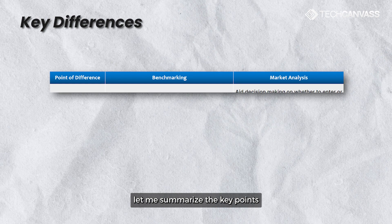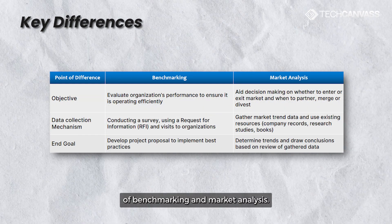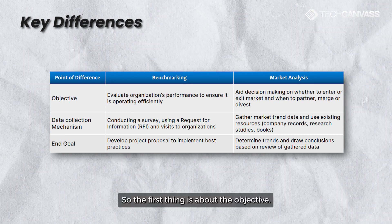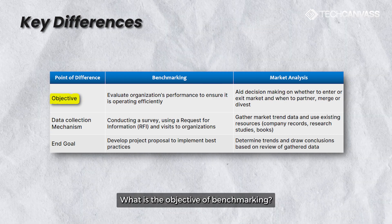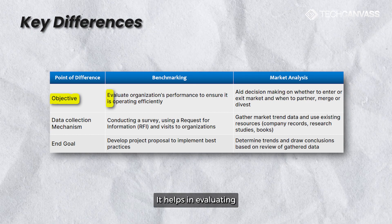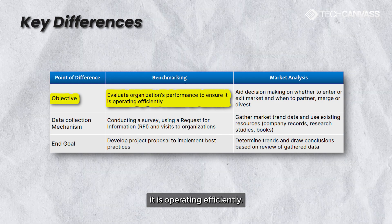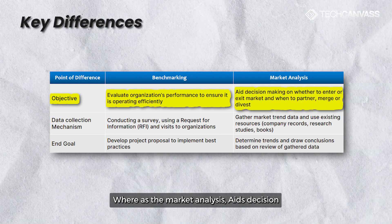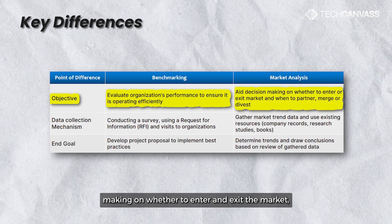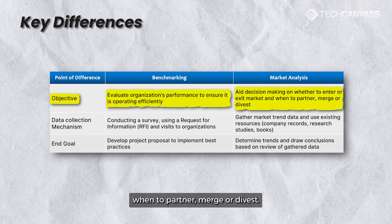Before I end, let me summarize the key points of benchmarking and market analysis. Regarding objectives: benchmarking helps in evaluating an organization's performance to ensure it is operating efficiently, whereas market analysis aids decision making on whether to enter or exit the market, when to partner, merge or divest.